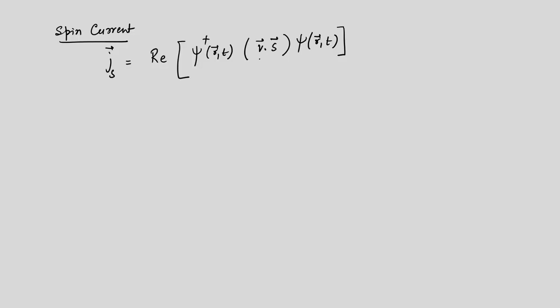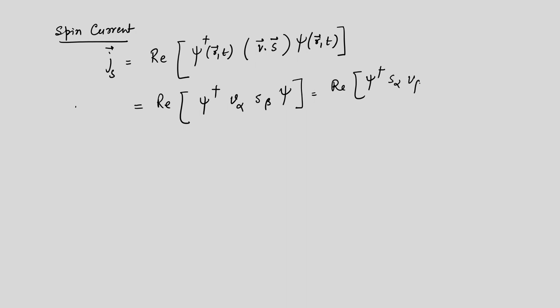This is the form of the spin current component. One can write the components: the real part can be written as ψ† (v_α S_β) ψ, which equals the real part of ψ† (S_α v_β) ψ. So one can write it as v_α S_β, where α and β are the components x, y, and z. These are just the current density components.